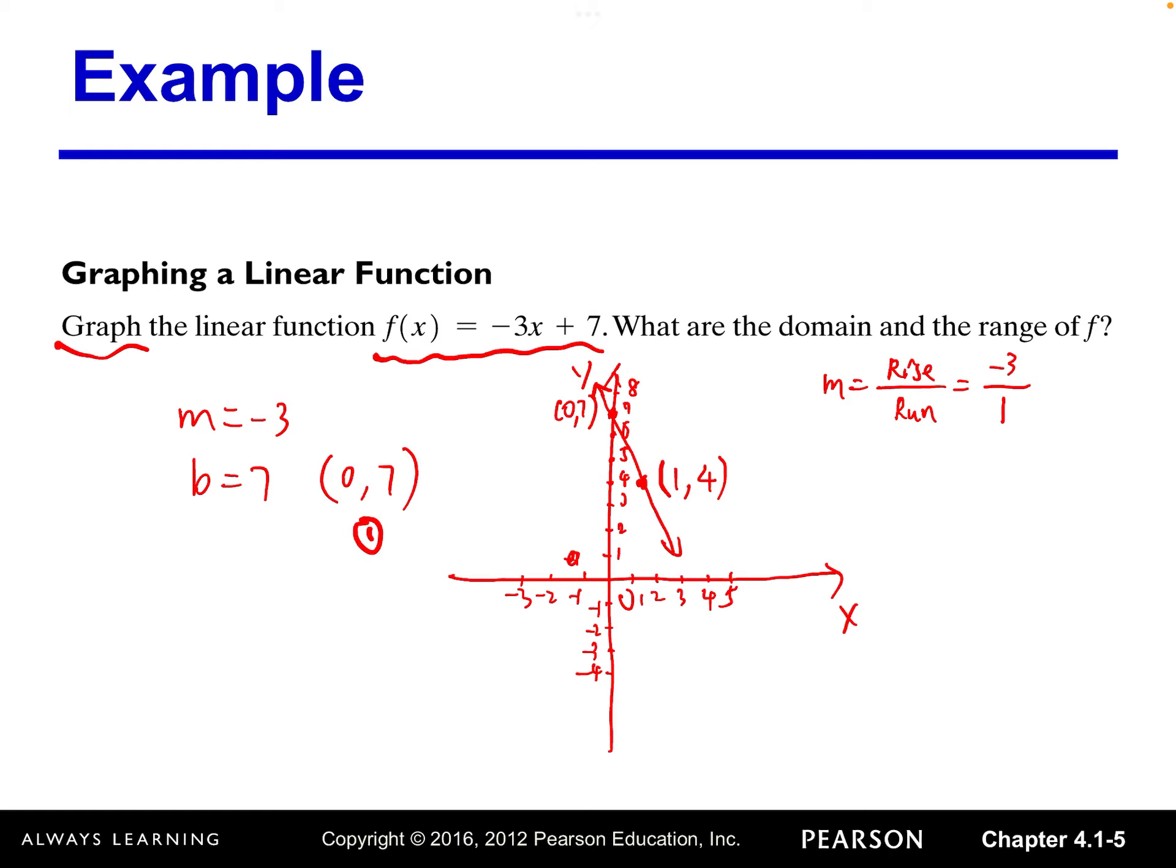If you want to consider rise over run as positive 3 over negative 1, that would be fine too. It just identifies different points on the line, but they're on the same line. If that is the case, every 3 units rise, 1 unit to the left. So this is another point. What's the coordinates of this point? X coordinate will be negative 1. Y coordinate will be from 7 go up 3—8, 9, 10. That will be negative 1, 10. So those three points are on the same line.